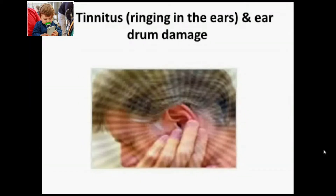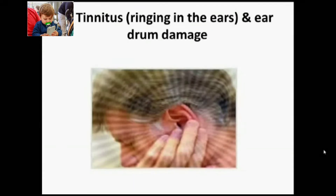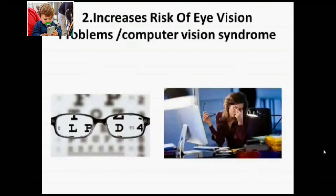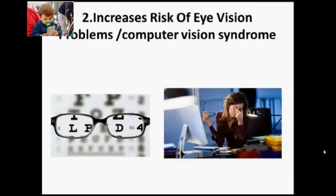Number one: tinnitus — ringing in the ears — and the eardrum can be damaged by mobile radiation. The next disease is an increased risk of eye vision problems, also known as computer vision syndrome, caused by mobile use.